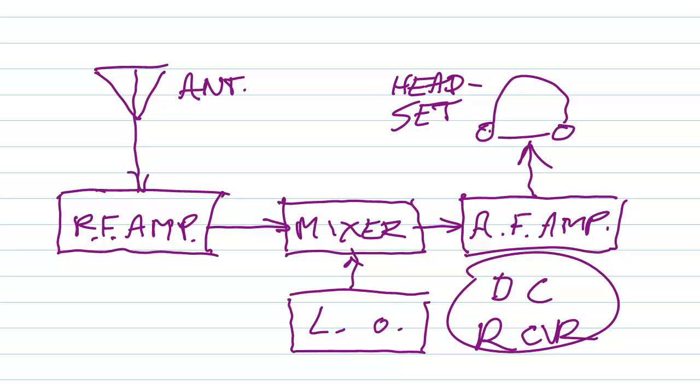Now what that is basically is a very simple design for receiving Morse code CW, radio teletype, phase shift keying, single sideband, and other forms of modulation that would ordinarily require a product detector and a super heterodyne receiver. But it's a very simple design.